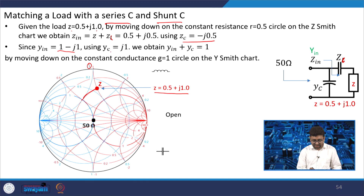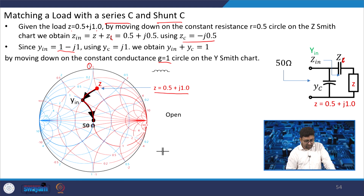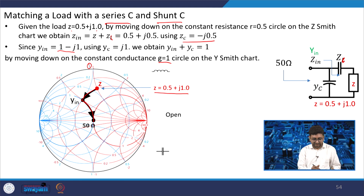If you add YC = j1 — meaning you travel on the Y Smith chart, the Y plane, and come down — then it is a capacitor-capacitor solution and you get conductance equal to 1. So you are moving from Z to Yin, where Yin = 1 − j1, and then moving from Yin to the conductance = 1 circle — that is 50 ohm.